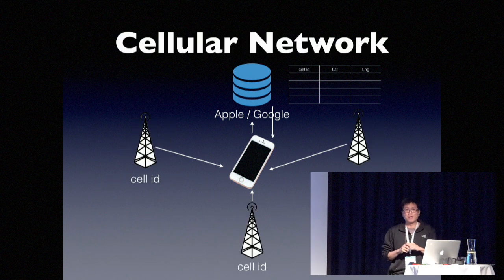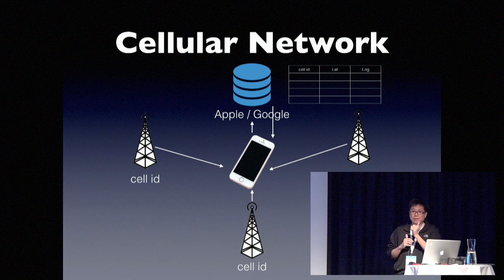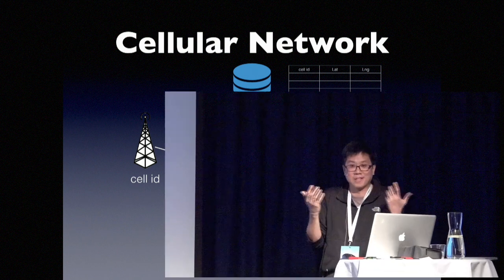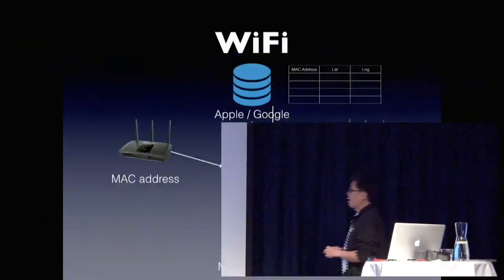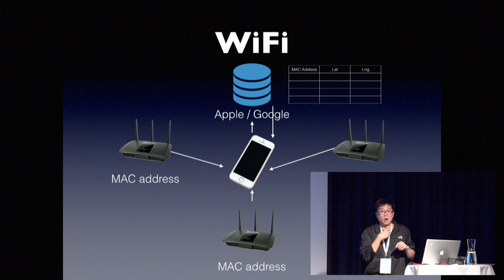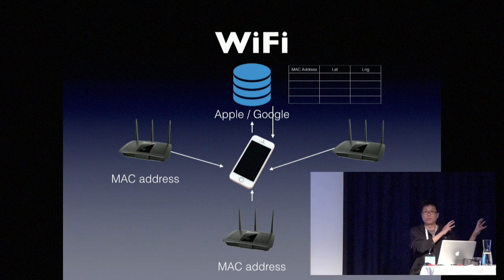How does WiFi help you get your location? People always say IP address, but that's not true — your home IP is likely 192.168.1.something. It actually works by the MAC address of wireless routers. Apple and Google have databases containing the addresses of all wireless routers around the world. How do they collect all this information? It's thanks to you and me — our phones are continuously transmitting this data to Apple and Google.